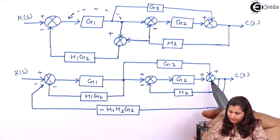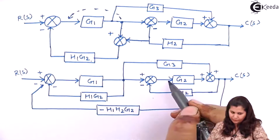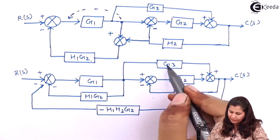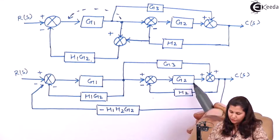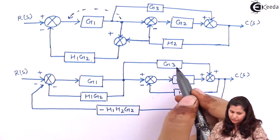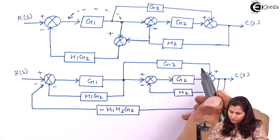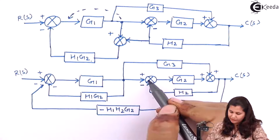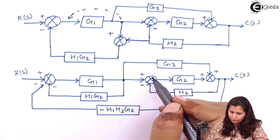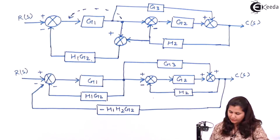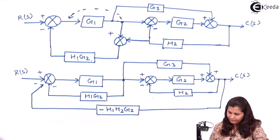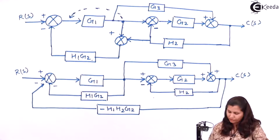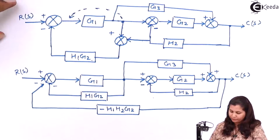Now let's shift this summing point before this block. When we shift this, we will divide G3 by G2, so we will get G3/G2 here, and this G3/G2 function will be given as input to this summing point. And G2 and H2 will then form the feedback loop here.